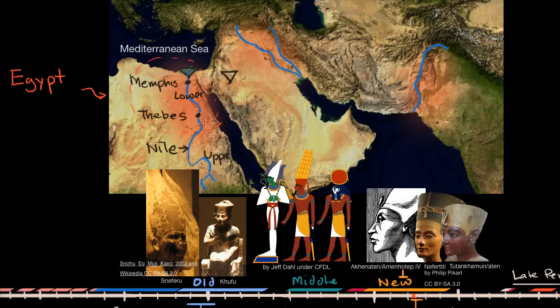Even though Egypt covers a lot of this region, most of the human population — true even today — lived right along the river, around that fertile soil where the agriculture actually occurs. This was so important to the ancient Egyptians that their whole calendar and their seasons were based on what the Nile River was doing. They had a season called the inundation — the flooding of the river — which makes the soil fertile. They had a season of growth for crops, and a season of harvest.